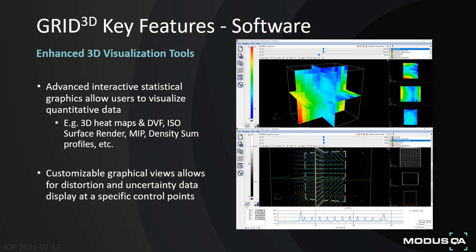As this is a 3D phantom, there are also enhanced visualization tools allowing physicists to better understand the nature of the system's geometric distortion in 3D format. Heat maps allow physicists to visualize quantitatively the distortion and uncertainty data as a customized global heat map, with red indicating regions of higher distortion and less distortion visible toward the ISO center point. There are also customizable graphic displays allowing analysis of the amount of distortion at any specific control point, accompanied by the uncertainty value detection within this 3D space — simply clicking on one of these points tells you that uncertainty information as well as the distortion value quite easily.